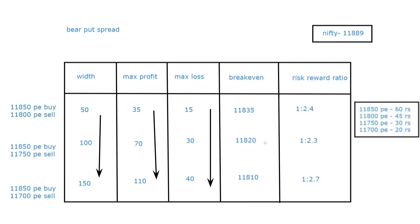This means the market needs to go below 11,820 for the 100-point spread to be profitable. With a 150-point width, the break-even goes even lower to 11,810. So a 50-point width has more opportunity to get you some profits because its break-even is a bit higher. For the 100 and 150-point widths, the break-evens are lower because you are paying a higher debit, which pushes your break-even down. That was the concept of the width of a debit spread — thanks for watching.